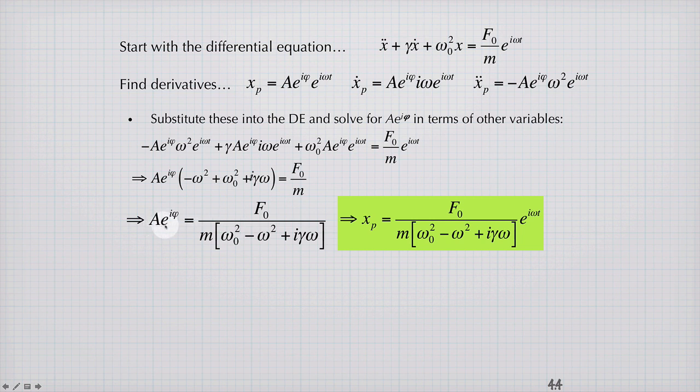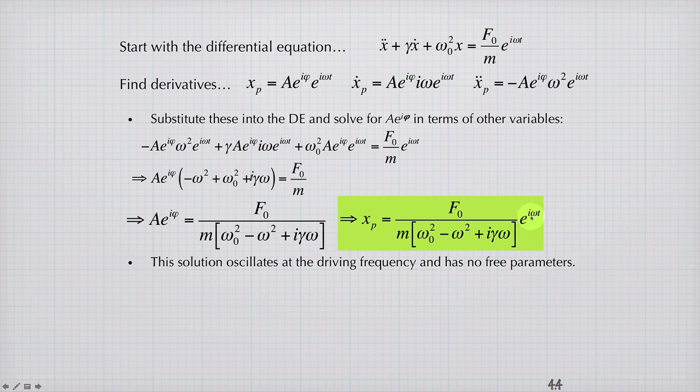We can write x of p, therefore, as A e to the i phi times e to the i omega t. So what we see here is this function for x of p oscillates at the driving frequency, omega, and has no free parameters.